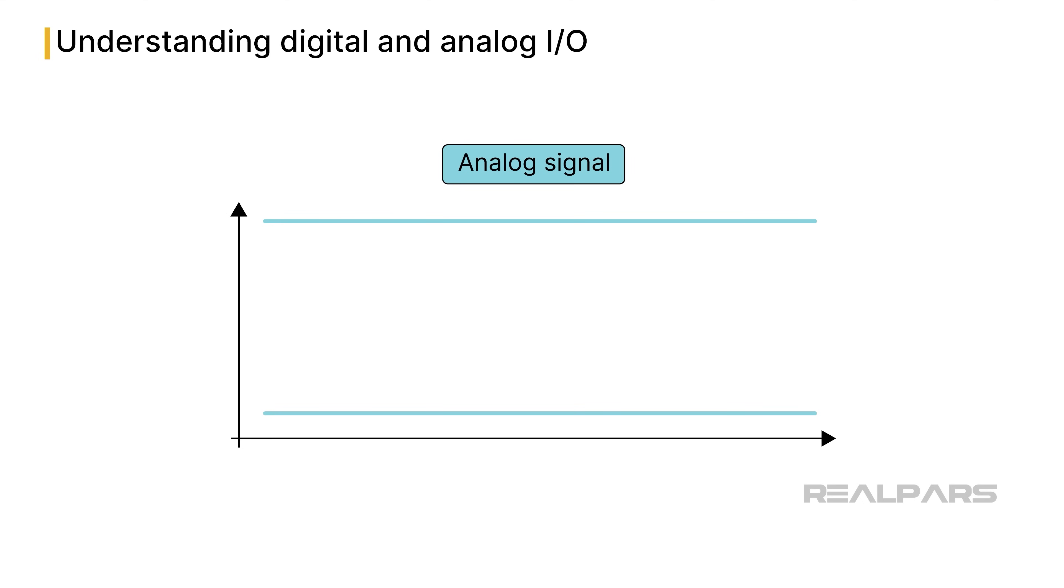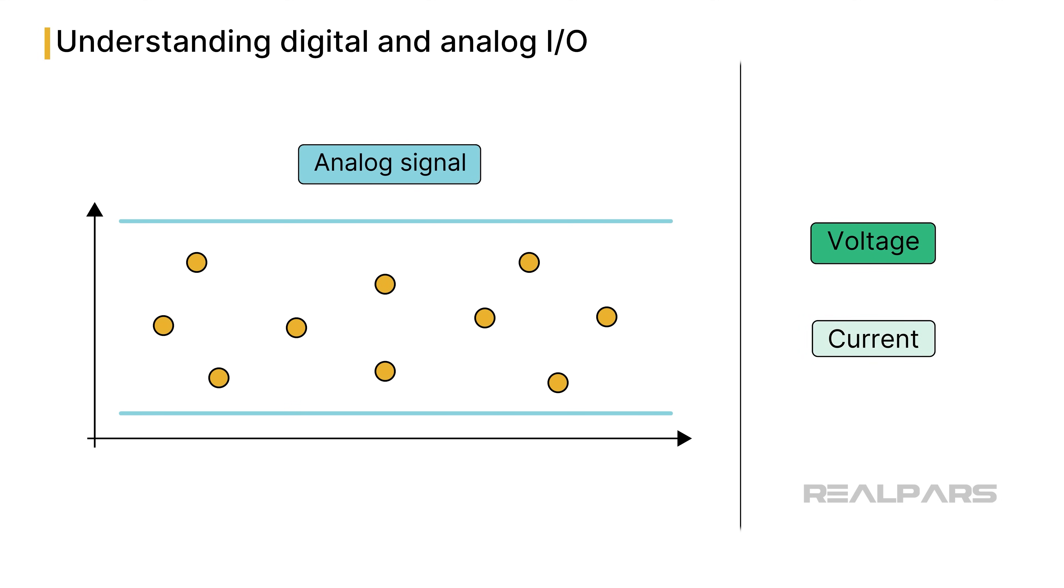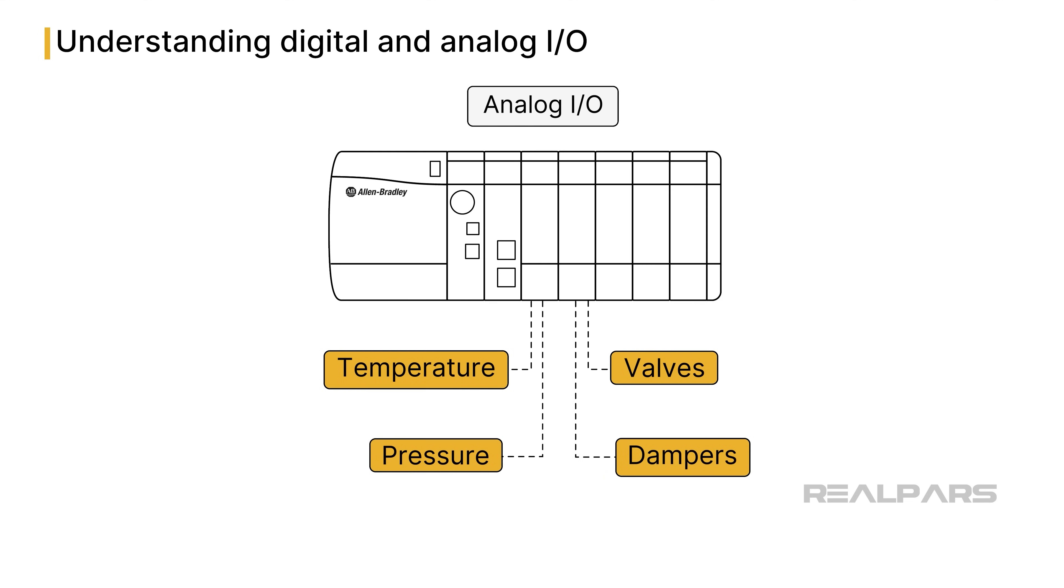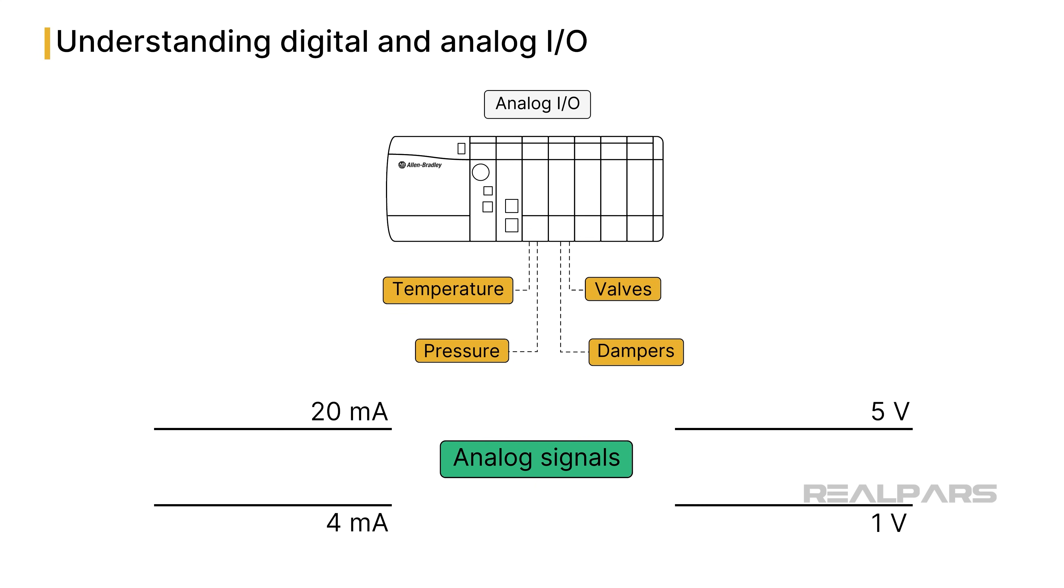The analog part is not so easy, as there are infinite possible conditions. Analog voltage or current signals represent input process variables, such as pressure and temperature. Analog voltage and current are also used to control output devices, such as valves or dampers. Two very common analog signal ranges are 1 to 5 volts and 4 to 20 milliamps.